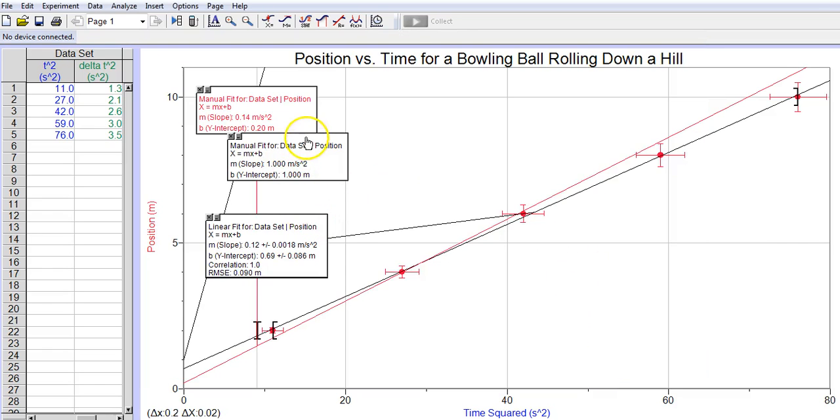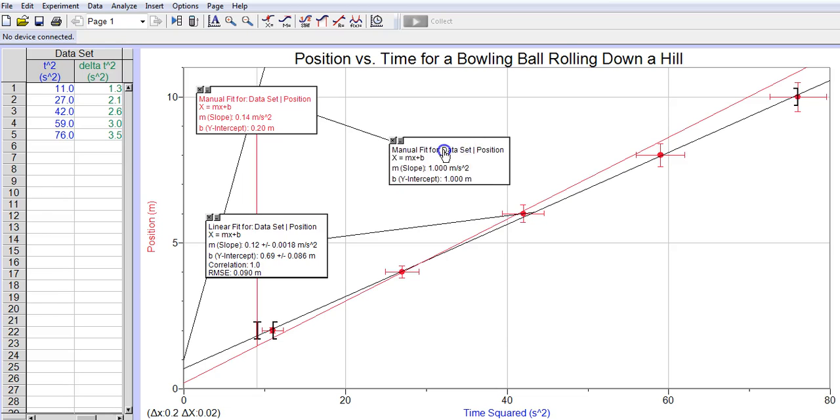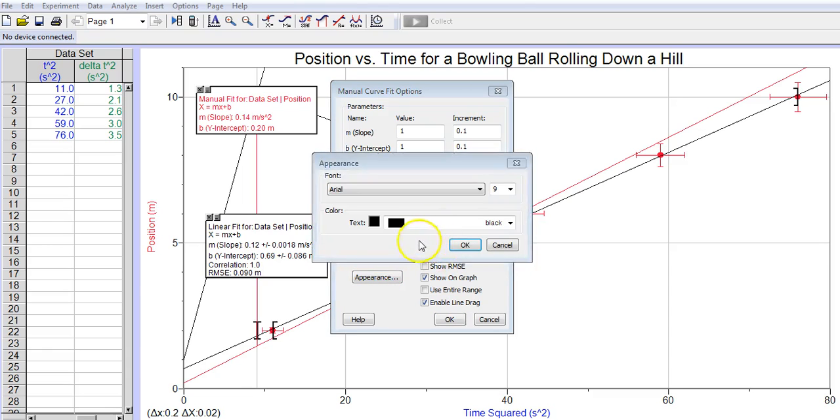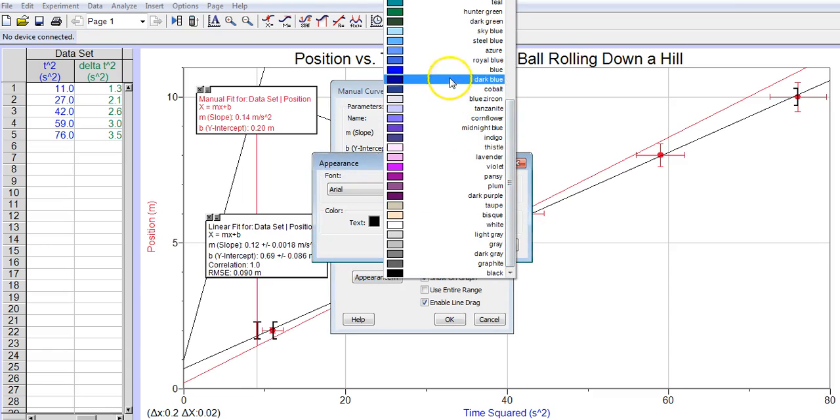Now that gives me another manual fit. I'm going to double-click on that. Again, I'm going to enable line drag. It gives me the chance to move it around. I'm going to pick two decimal places to match up with the others.